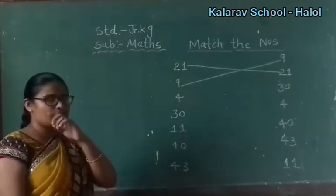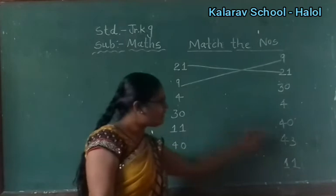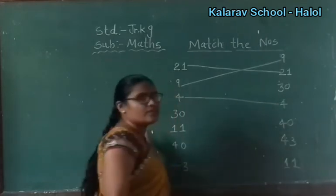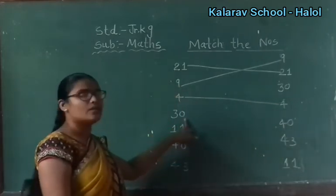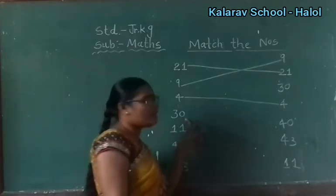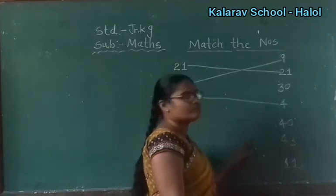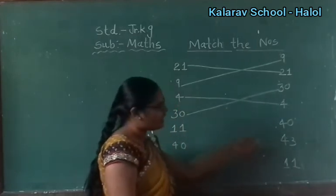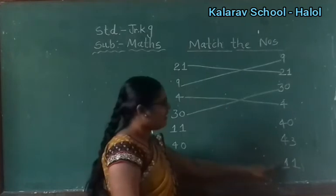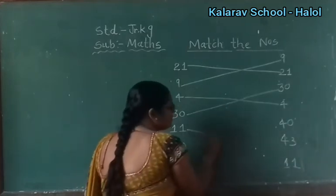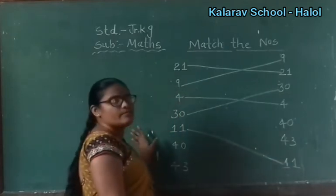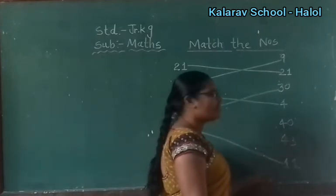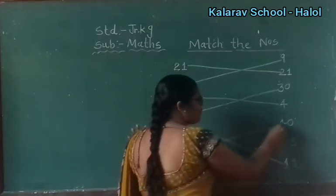This one is 4. Which number? 4. Find out where is the number 4, children. Yes, here. Now 3, 0 — 30. Where is the number 30, children? Look here and find out. Yes, here. So match. Now match with 4, 0 — 40. Find out the number 40. Where is it? Yes, here. So match 40 to 40.